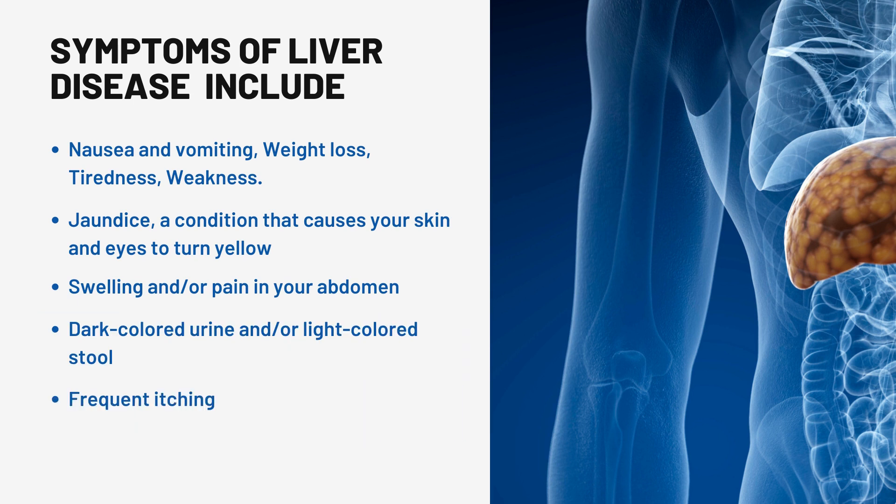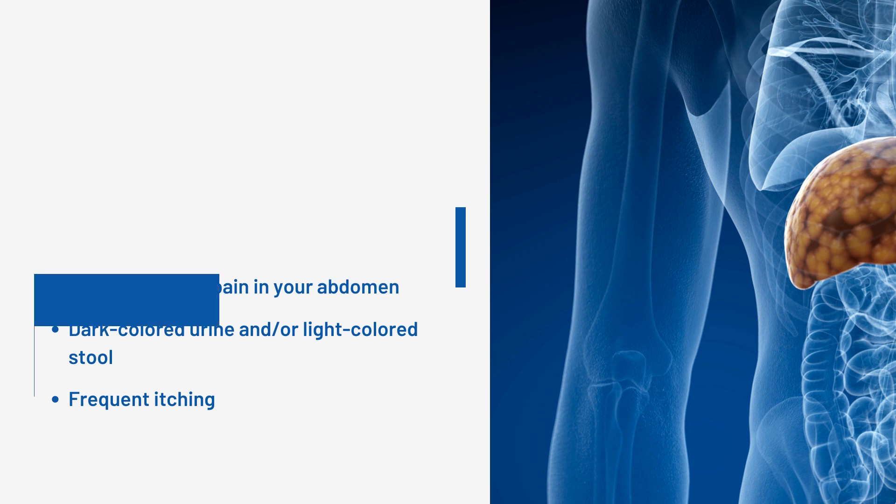Symptoms of liver disease include: nausea and vomiting, weight loss, tiredness, weakness, jaundice — a condition that causes your skin and eyes to turn yellow — swelling and/or pain in your abdomen, dark-colored urine and/or light-colored stool, and frequent itching.